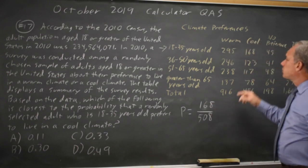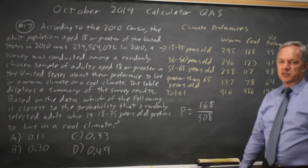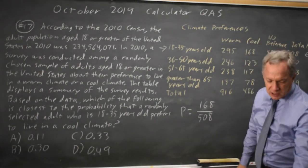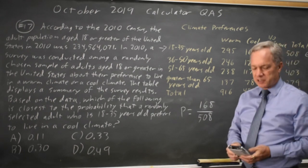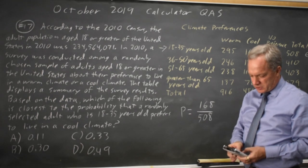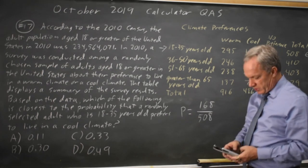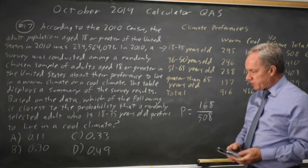Your numerator, those who prefer cool among those 18 to 35, and your denominator, all those 18 to 35. And of course I would prefer to do this on a scientific calculator or a graphing calculator. 168 over 508 is 0.3307.